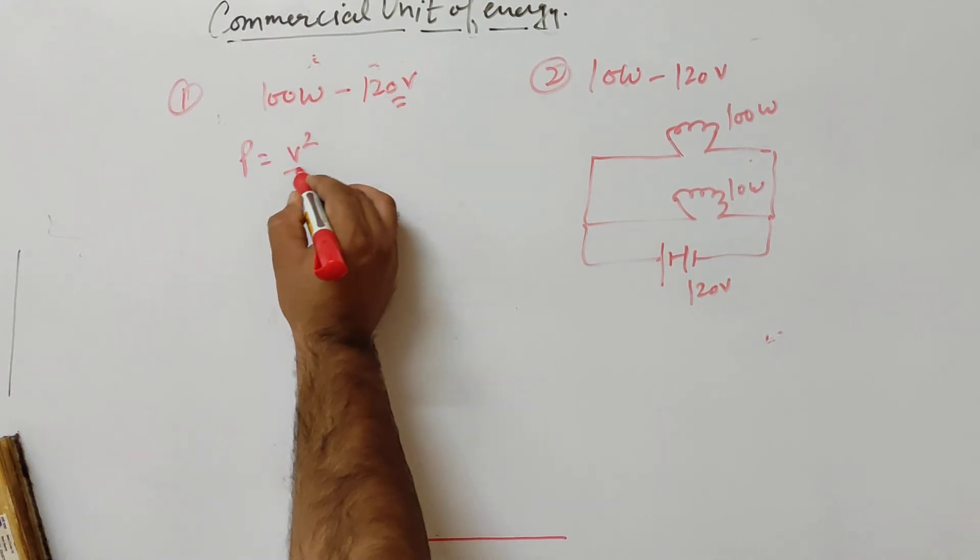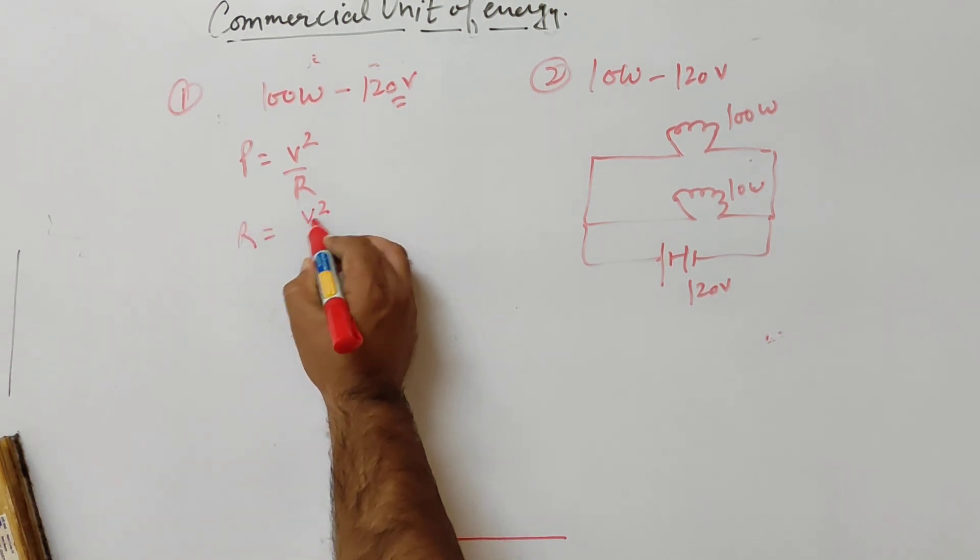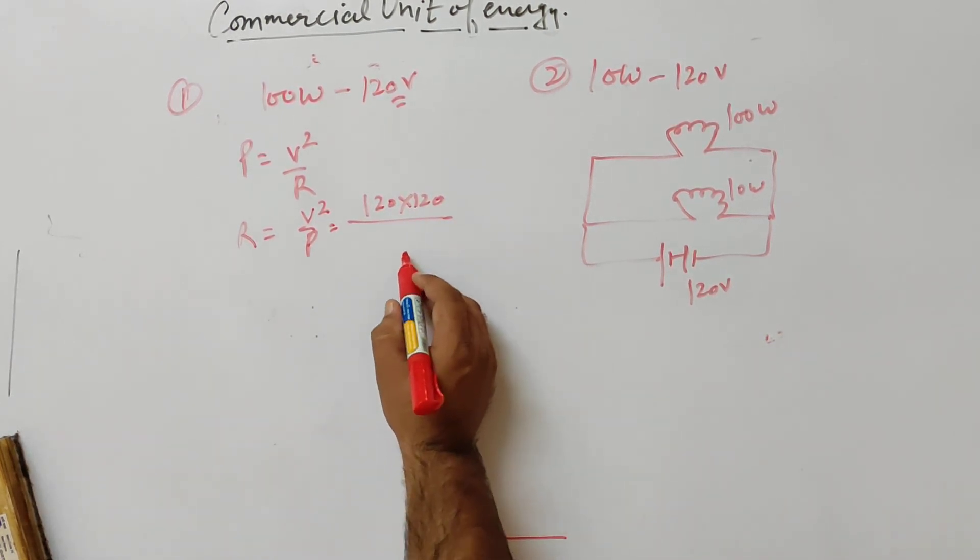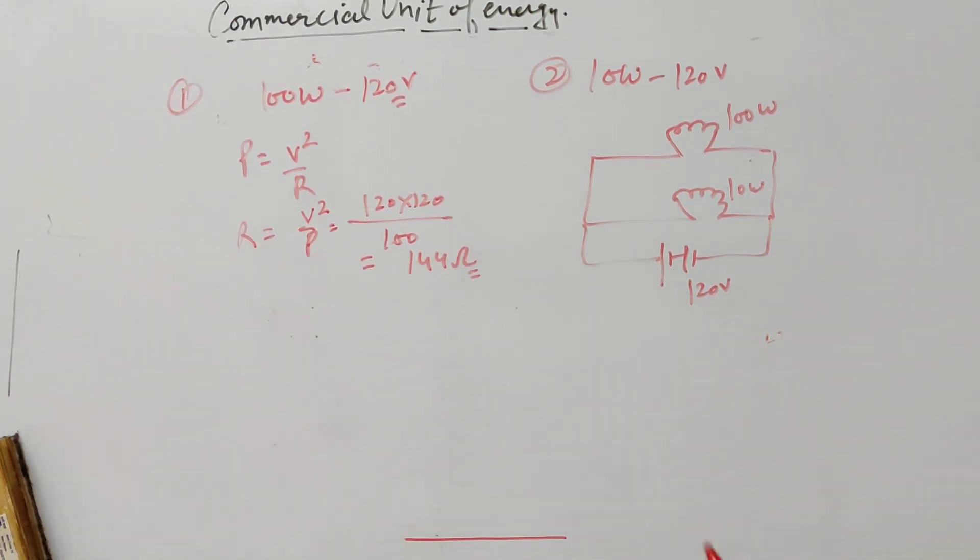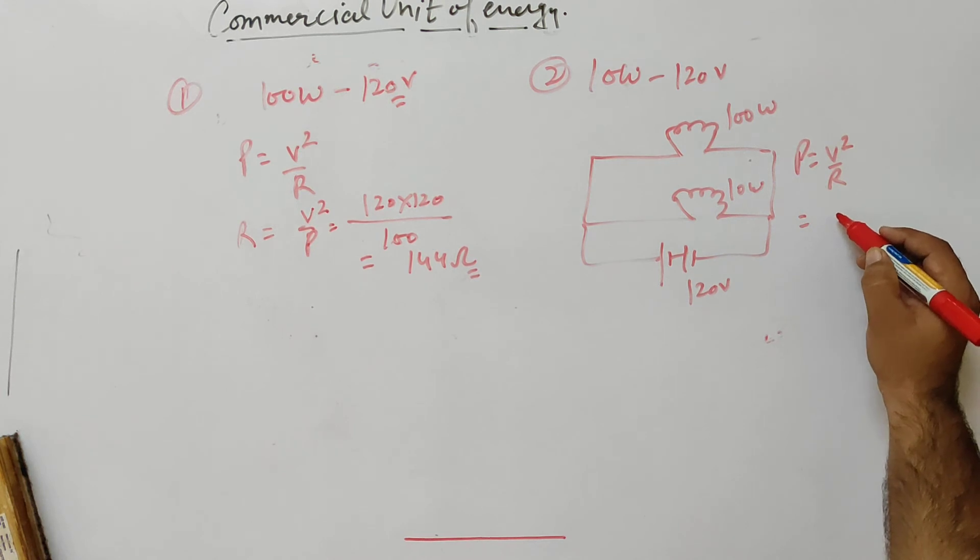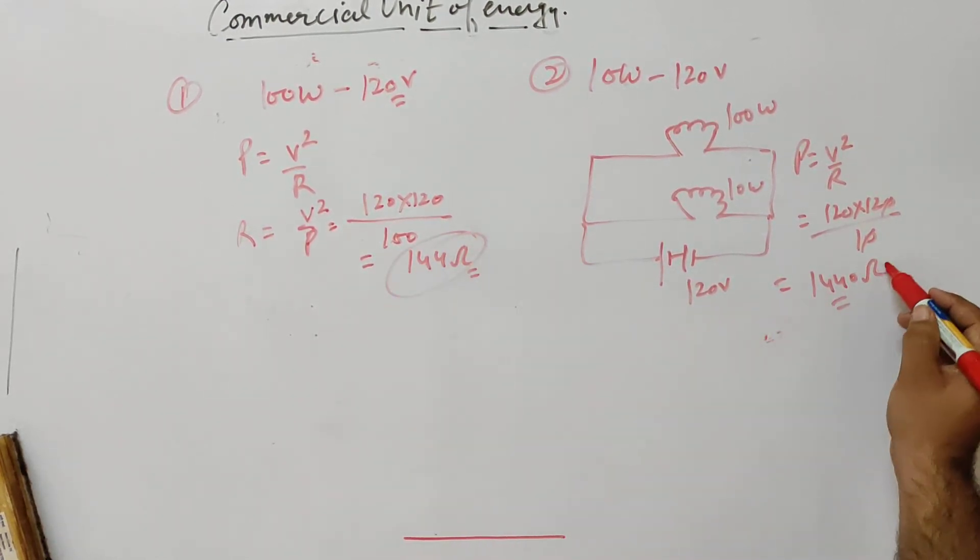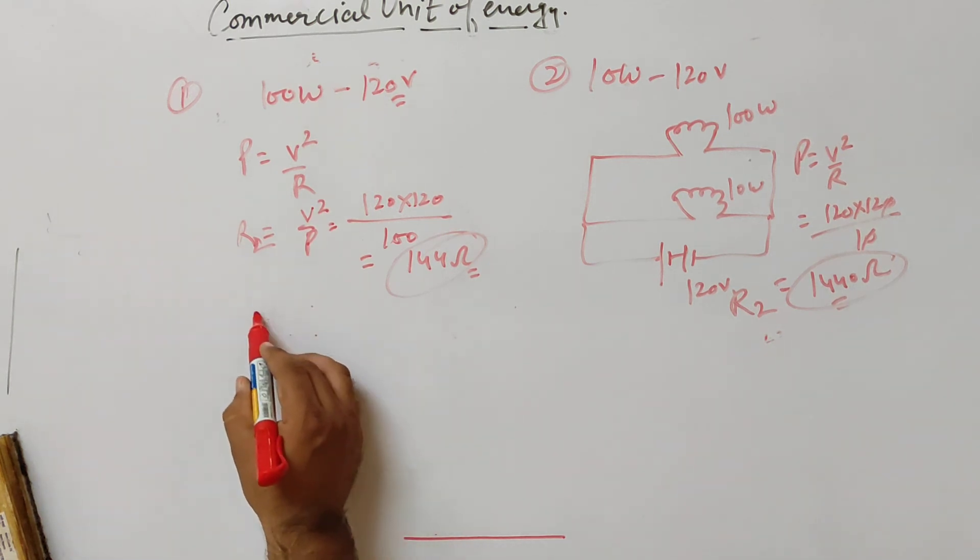For parallel, P equals V squared by R. You will find R from V squared by P. V is 120, so 120 squared upon 100 gives R1 equals 144 ohm. For the second, 120 squared upon 10 gives R2 equals 1440 ohm.